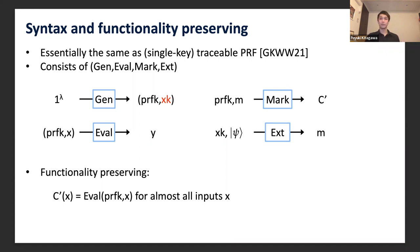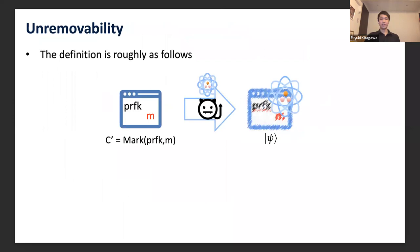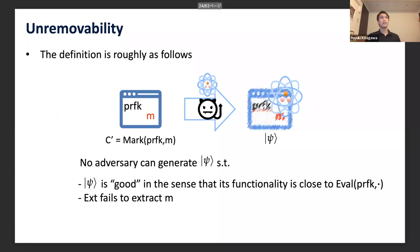Now I move on to the security notion: unremovability. The definition of unremovability is roughly as follows. We generate a marked evaluation circuit C' from a PRF key and mark m, and give it to an adversary. The adversary then generates a quantum program ψ. Unremovability requires that no adversary can generate a quantum program ψ such that ψ is a good quantum program — its functionality is close to the original evaluation circuit — but the extraction algorithm fails to extract m.